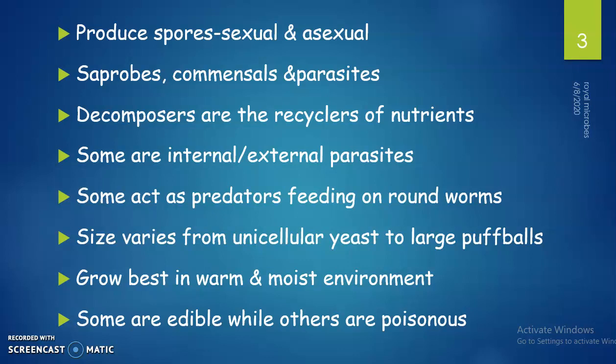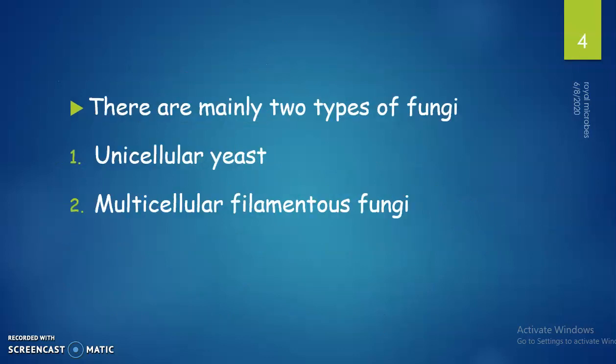Some can act as predators, feeding on roundworms. Size varies from unicellular yeast to large puffballs. They can grow in warm and moist environments. Some are edible while others are poisonous — for example, mushrooms. There are mainly two types of fungi: unicellular yeast and multicellular filamentous fungi.